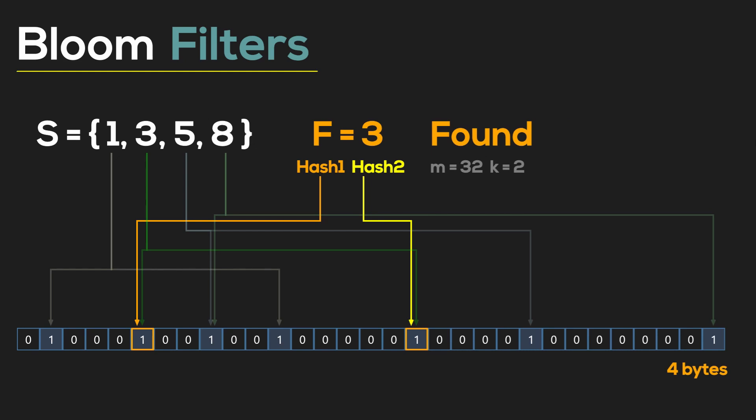Let's try a different number. This time only one of two entries resolves to one, so the number 11 is not in the bloom filter. Let's try a different number that's not in the set.